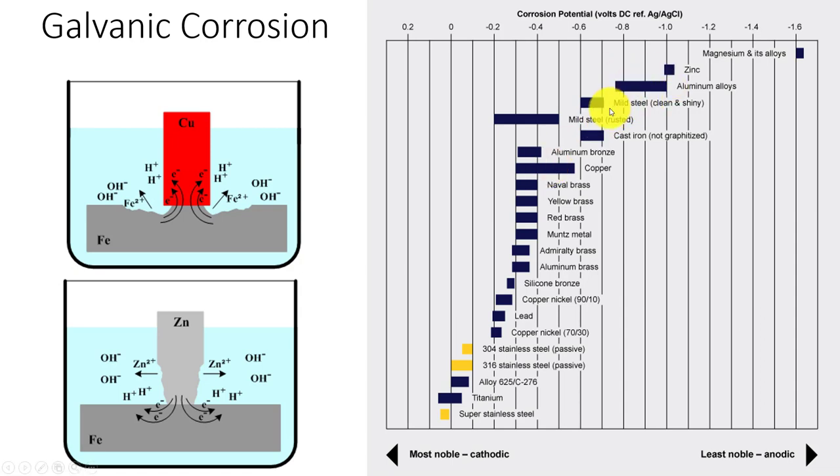Right here we have steel. So we're going to see the steel tend to corrode because it's more anodic. If we look at this chart, yes, we're going to have some corrosion going on.